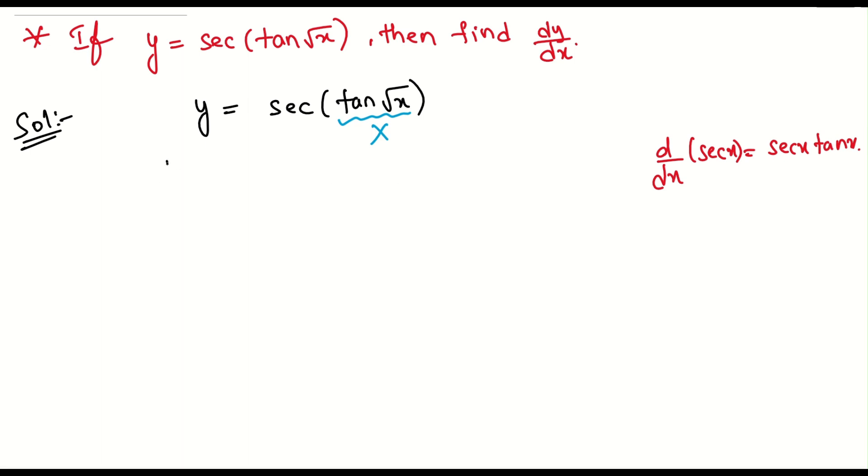So this is nothing but differentiate this function with respect to x. This will be dy by dx must be equal to secant capital x, now in place of capital x I will write the whole thing, that is tan root x into tan of capital x means what? Tan root x.